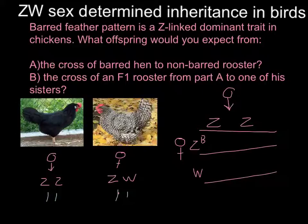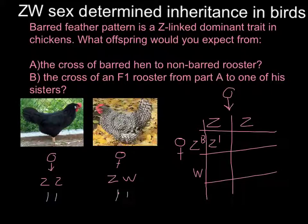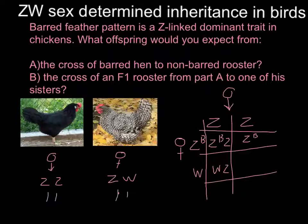So here is our Punnett square. For the male we have Z and Z^B — where B stands for barred — and for the female side we have Z and W. Filling in the squares: we get Z/Z^B from the male side combined with Z and W from the female side.